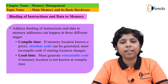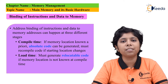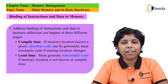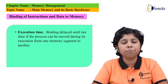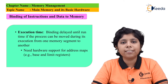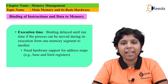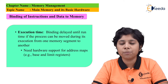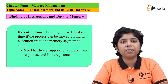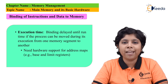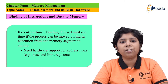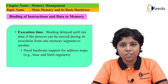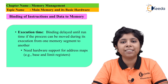Base registers and limit registers together combinedly provide protection to the operating system from user processes, and between user processes themselves. Protection of memory access is accomplished by hardware implemented by the CPU. The CPU checks every address provided by a program against these registers. If the address is not within the allowed range, it traps an error to the operating system — such as an illegal access operation or illegal use of another user's process.